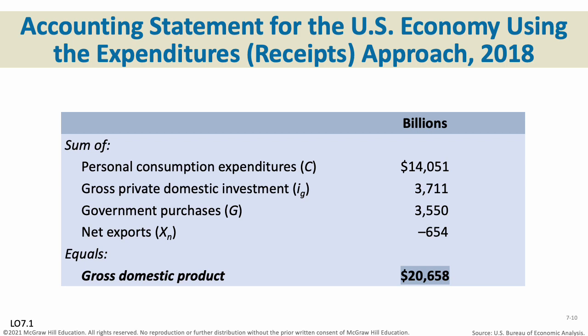Looking at the U.S. economy in 2018 using the expenditures approach, the formula is C plus IG plus G plus XN. Personal consumption is all goods and services bought by private individuals — in 2018 that was around $14 trillion. Gross private domestic investment is money that businesses invest in their futures: plant, equipment, new factories, new buildings — about $3.7 trillion.